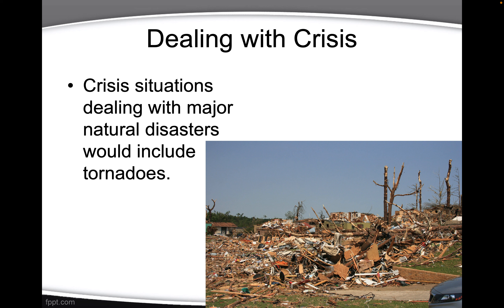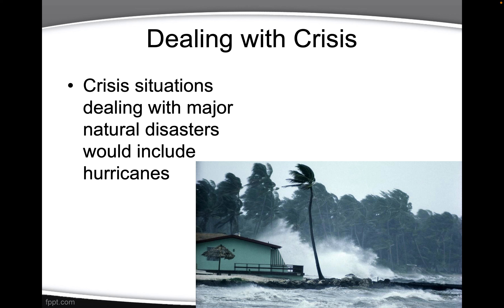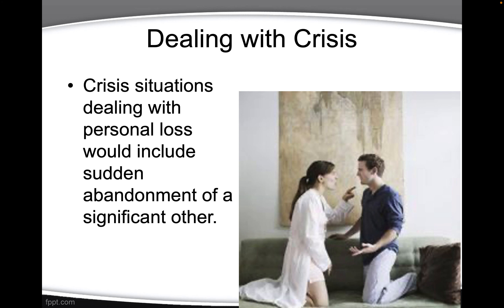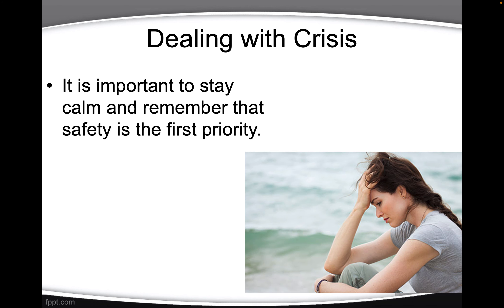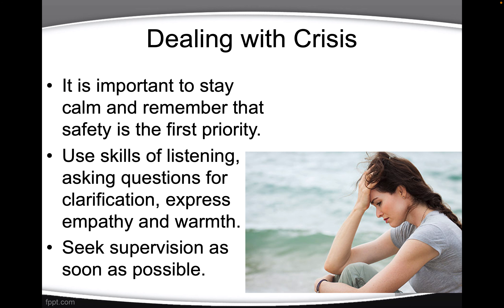Major natural disasters include tornadoes — this is a picture from Oklahoma. Crisis situations also include fires and hurricanes, which people on the East Coast definitely deal with. Crisis situations dealing with personal loss include unexpected death of a family member and sudden abandonment of a significant other. It is important to stay calm and remember that safety is the first priority. Use skills of listening and asking questions for clarification, express empathy and warmth, and seek supervision as soon as possible.